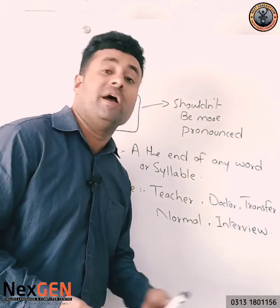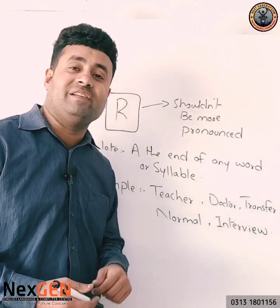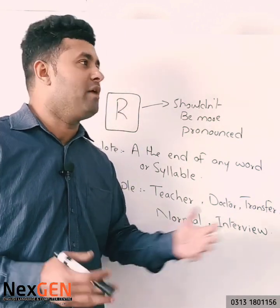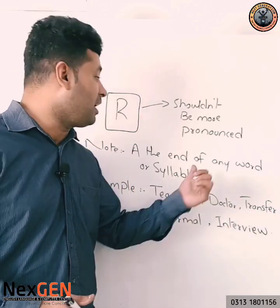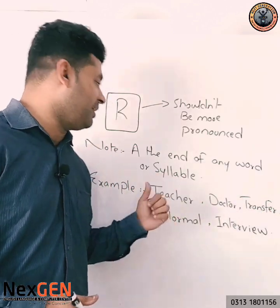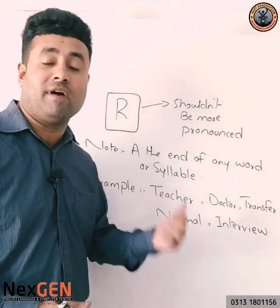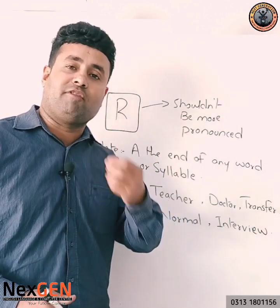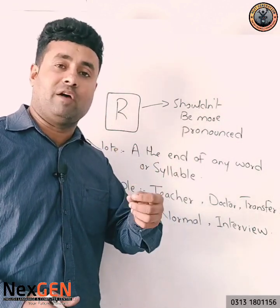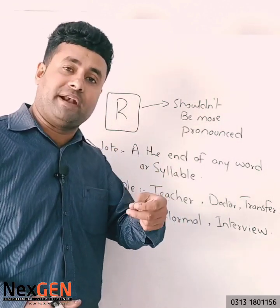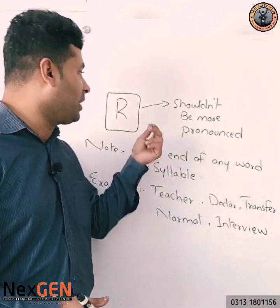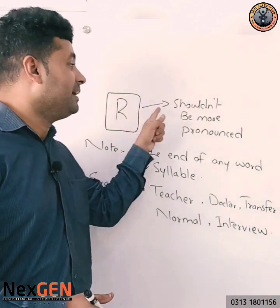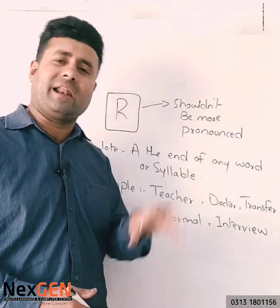When a syllable ends on R — like in 'interview', 'international', 'circle' — I was sitting in a big circle, 'transfer', 'deliver', 'teacher', 'doctor', 'father', 'mother'. This is the first rule: whenever you want to pronounce with a good accent, you follow this rule — R shouldn't be more pronounced.